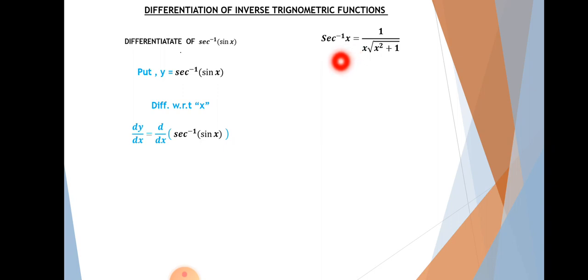Sec inverse x equals one upon x times the square root of x squared plus one. Now see, the formula starts with x. Whatever is written under the angle, inside sec inverse theta or sec inverse x, that x will be here. So sine x is our x here. Sine x will be written here, and in the root we'll take sine x.